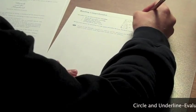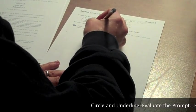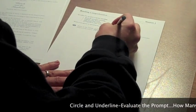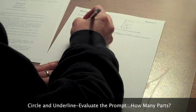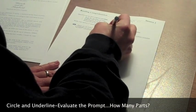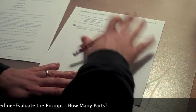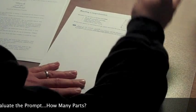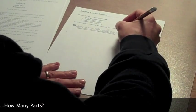First thing I do is evaluate - circle and underline how many parts. Based on the folktale, explain how March and the Shepherd could both be considered tricksters. Support your answer with important details from the folktale. This is two parts because it's both March and the Shepherd.